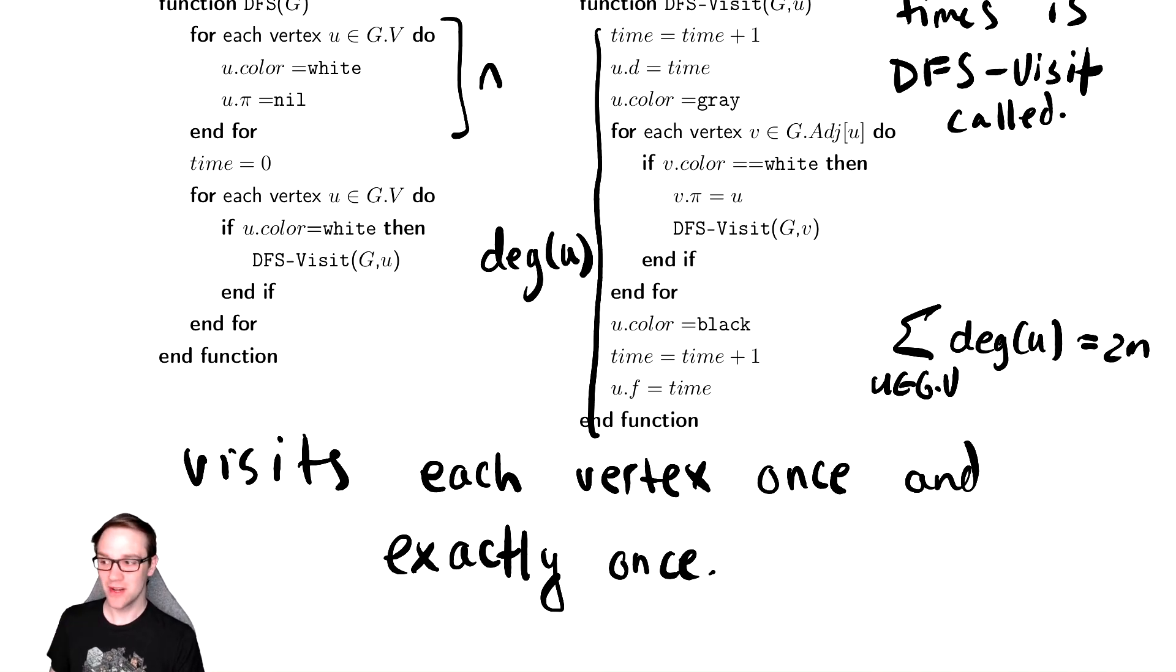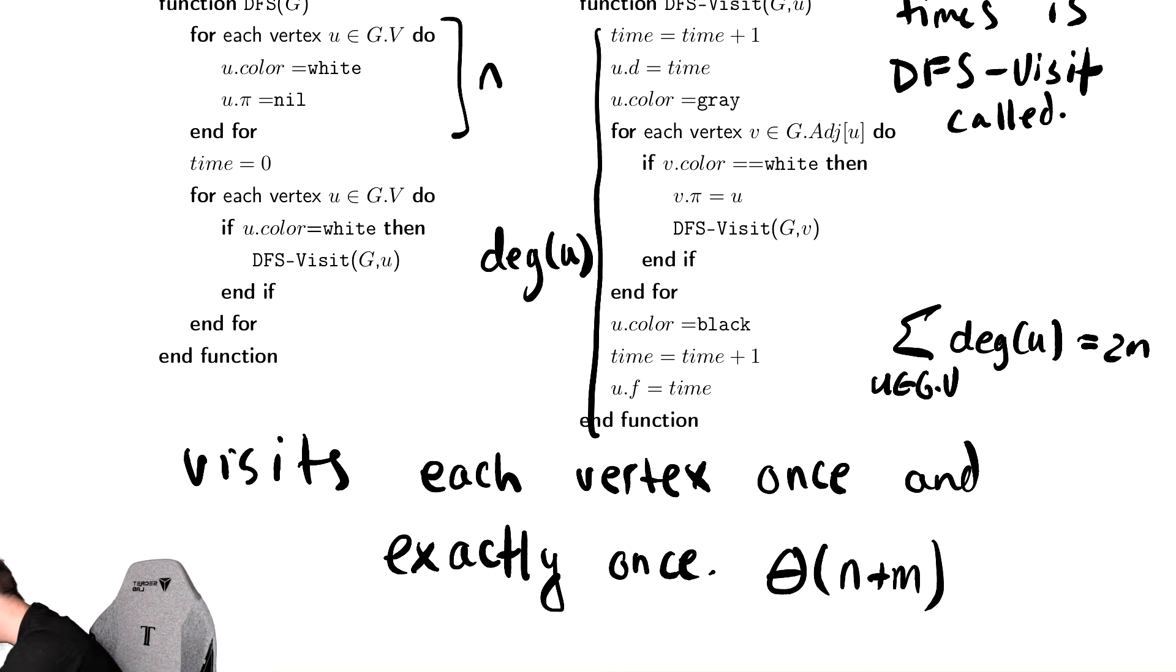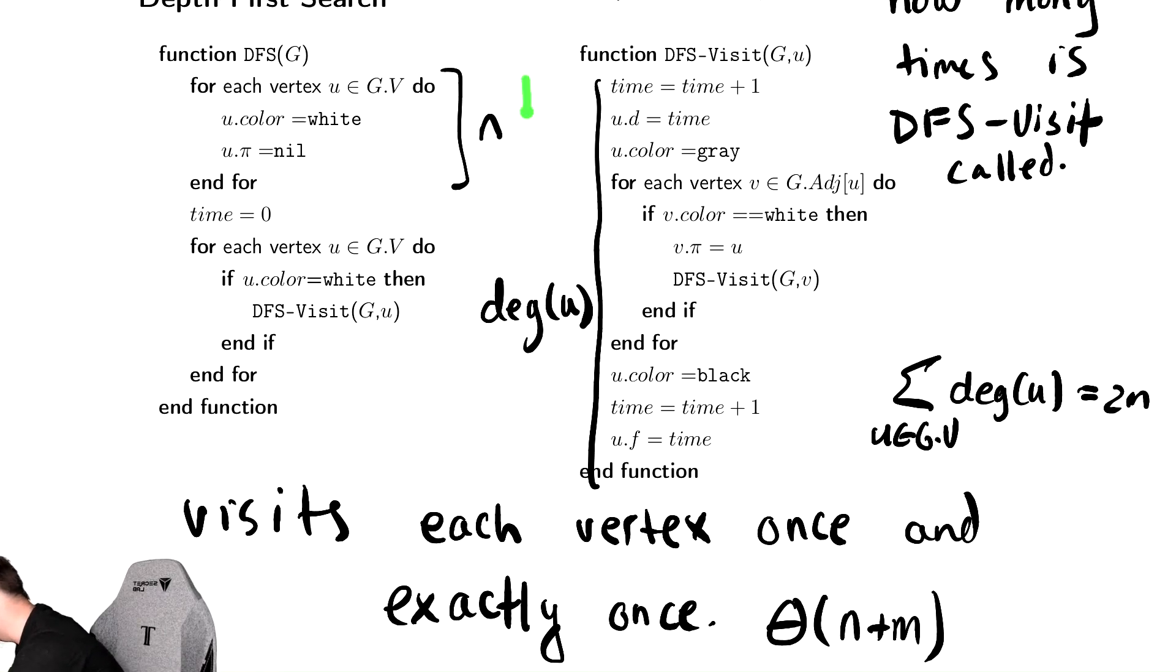Because we do this initialization step which takes n time, and DFS-Visit takes as a total amount of time by adding up the cost of each run. We're not caring what order it occurs, since that would be complicated to figure out. We just know it's going to get called on every vertex.